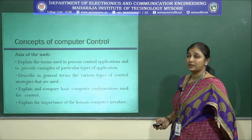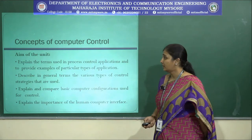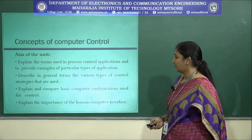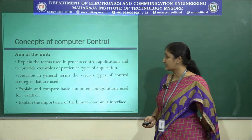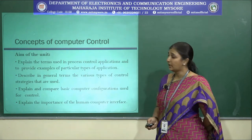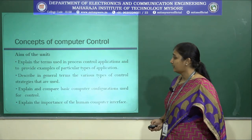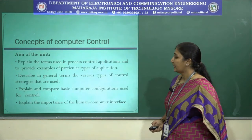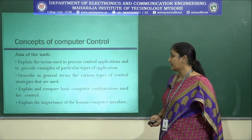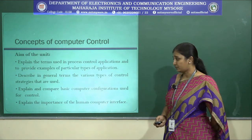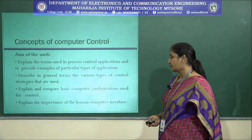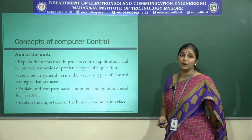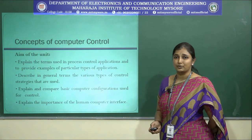The concept of computer control basically aims to: first, explain the terms used in process control applications and provide examples of particular types of applications. Second, describe in general terms the various types of control strategies used. Third, explain and compare the basic computer configurations used for control. Fourth, explain the importance of the human-computer interface. Under these four major aims we are going to learn about computer controls.